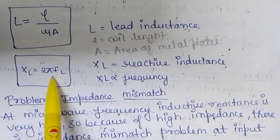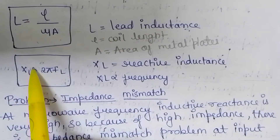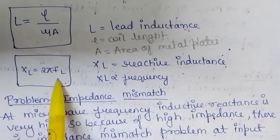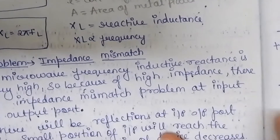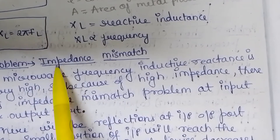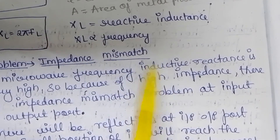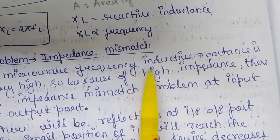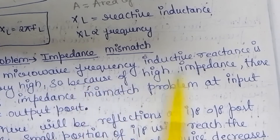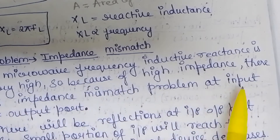As you can see, X_L is directly proportional to frequency in the lead inductance, while in the inter-electrode capacitance effect X_L was inversely proportional to frequency. The problem in lead inductance is impedance mismatch: at microwave frequencies, the inductive reactance is very high.